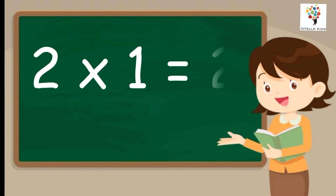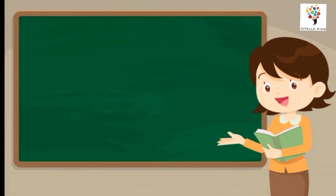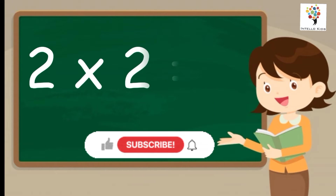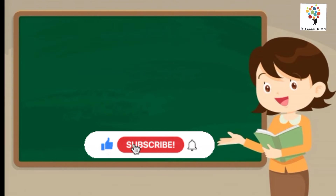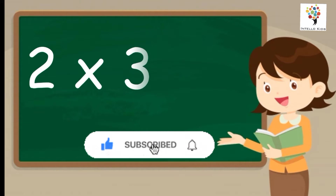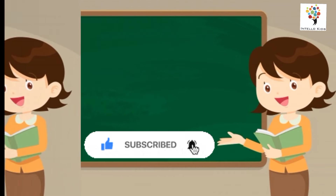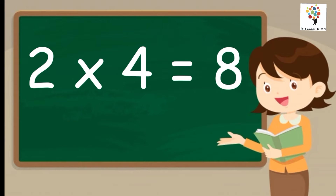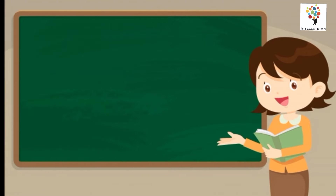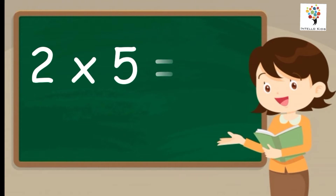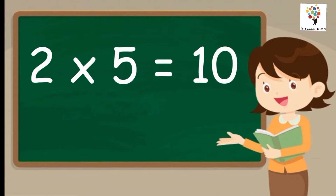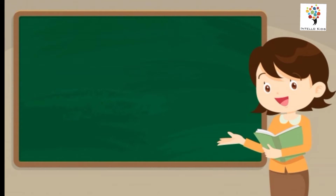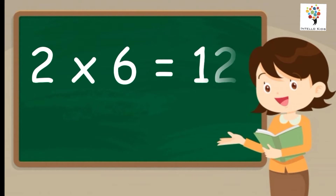Two ones are two. Two twos are four. Two threes are six. Two fours are eight. Two fives are ten. Two sixes are twelve.